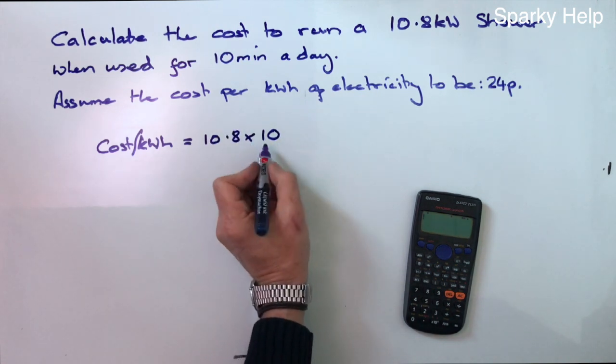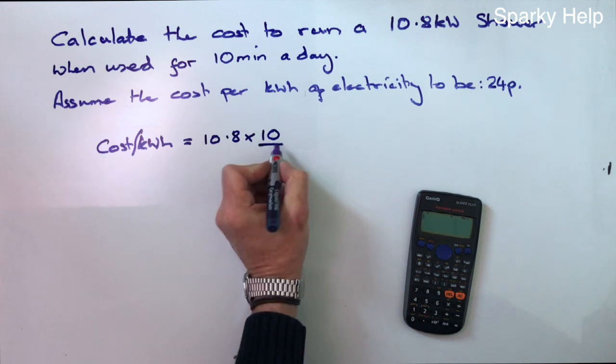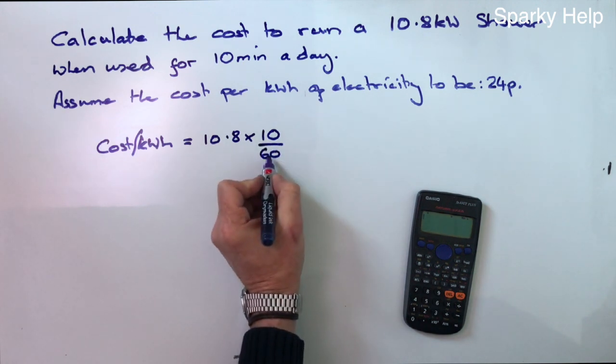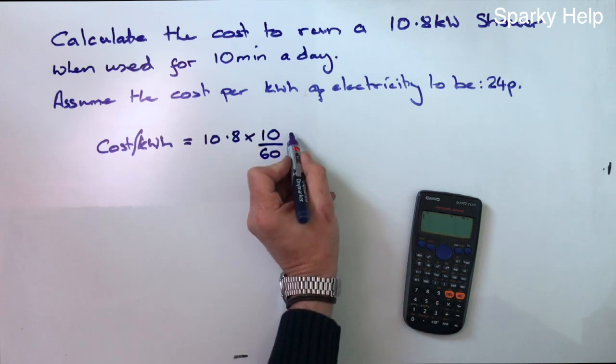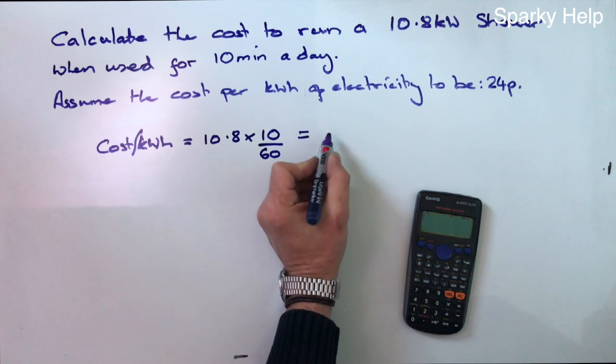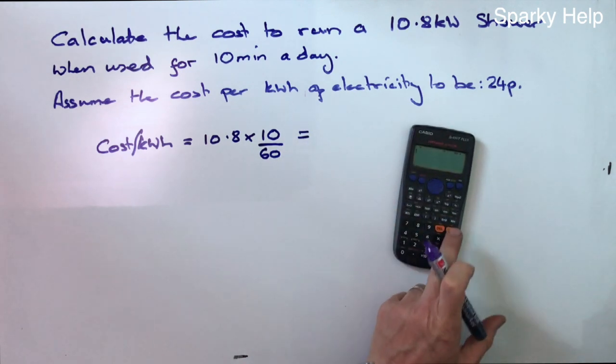But we need this to be in hours. And so we divide this by 60, because there are 60 minutes in an hour. Then we'll get a fraction. And if we multiply that out, you'll get the kilowatt hours.